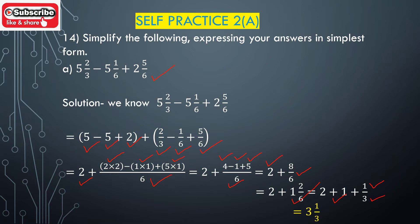So we get 3 plus 1/3, which equals 3¹/3. Therefore, 5²/3 minus 5¹/6 plus 2⁵/6 is equal to 3¹/3.